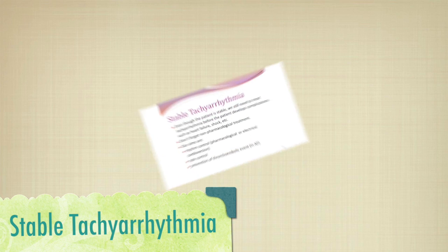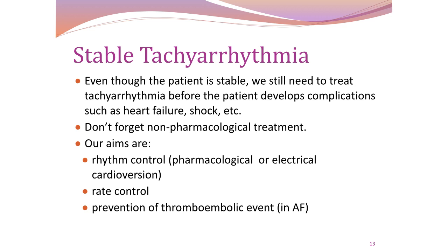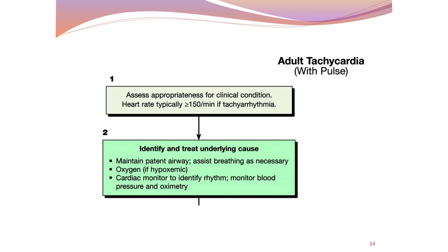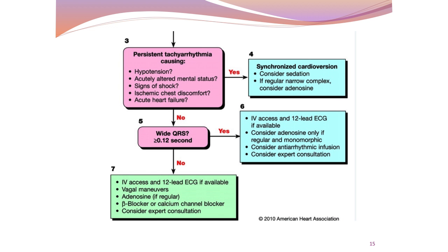For stable tachyarrhythmia, even though the patient is stable we still need to treat before complications such as heart failure and shock develop. Our aims are rhythm control, rate control, and prevention of thromboembolic events — particularly in atrial fibrillation. Following the adult tachycardia with pulse algorithm from AHA guidelines: assess clinical appropriateness, identify and treat the underlying cause, secure airway, breathing, and circulation, and monitor vital signs. If persistent tachycardia causes signs of shock, give synchronized cardioversion. If the patient is stable with a wide QRS complex, consider anti-arrhythmic infusion. For narrow regular rhythm or SVT, perform vagal maneuvers if there is no contraindication.